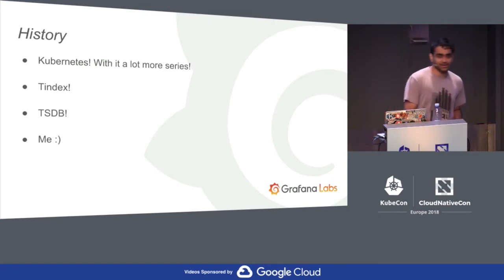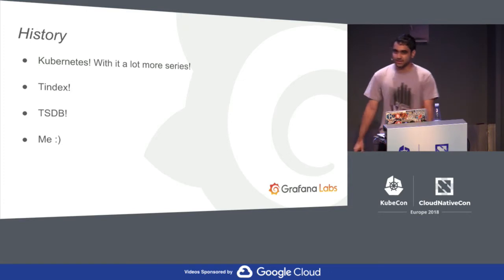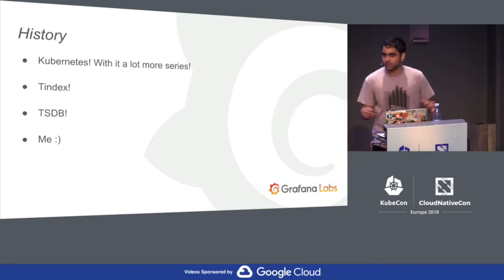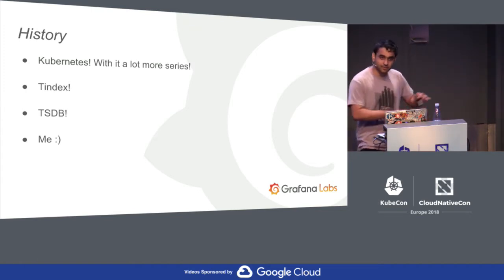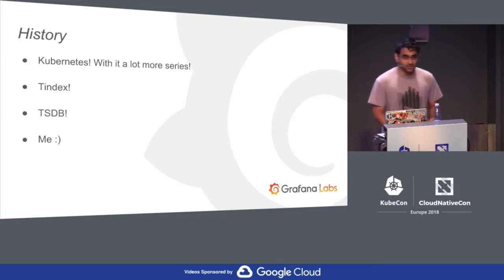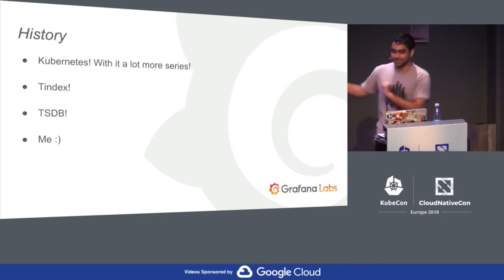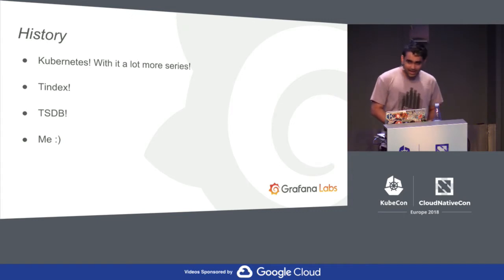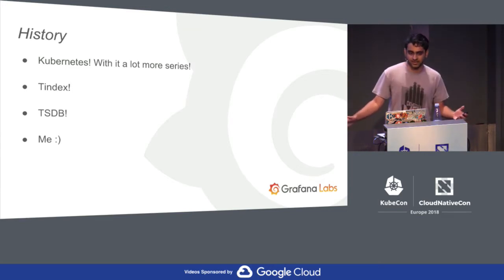But then came Kubernetes. With Kubernetes, there was a lot more series — a lot more dynamic environments, a lot more things happening. And this kind of wasn't working out. Even SoundCloud was facing issues. So Fabian, the main author of TSDB, started experimenting on the side, and he came up with Tindex — which sounds like Tinder, but it's not. It's a time-indexed index, to index time series data. That experiment went quite well, and based on it, he rewrote the complete thing — not just the index. And that was TSDB.